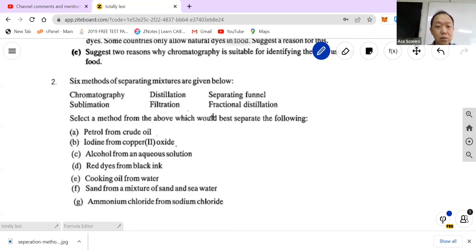So you can actually use a separating funnel. So back to here, alcohol from an aqueous solution, we will use distillation because they can mix. Cooking oil from water, we will use a separating funnel because they are immiscible. Next, sand from mixture of sand and sea water, we use filtration because the sand cannot dissolve. And lastly, ammonium chloride from sodium chloride, because ammonium salts can sublime, so we use sublimation.